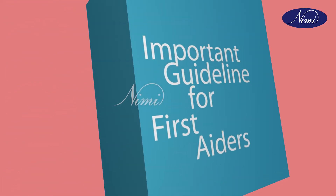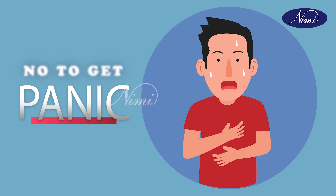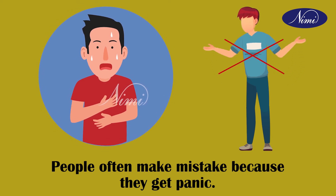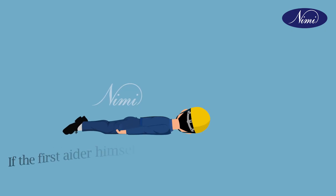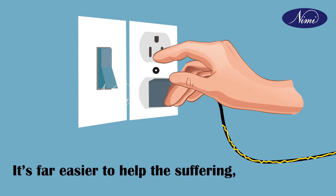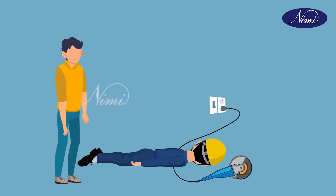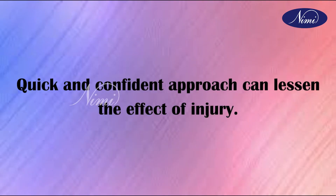Important guidelines for first aid: when providing first aid, one needs to follow some rules. Do not get panic — panic is one emotion that can make the situation worse. People often make mistakes because they panic. First aiders need a calm and collected approach. If the first aider is in a state of fear and panic, mistakes may result. It is far easier to help the suffering when you know what you are doing. Hence, be calm and focus on the given instructions. A quick and confident approach can lessen the effect of injury.